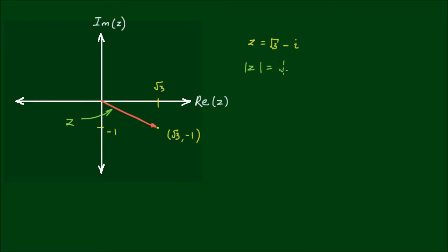is equal to the square root of x² plus y², which in this case is equal to the square root of root 3 squared plus negative 1 squared. And this is equal to the square root of 3 plus 1. 3 plus 1 is 4 and the square root of 4 is equal to 2.